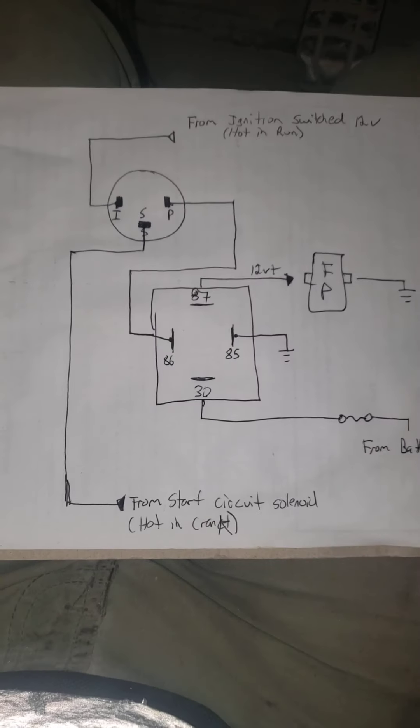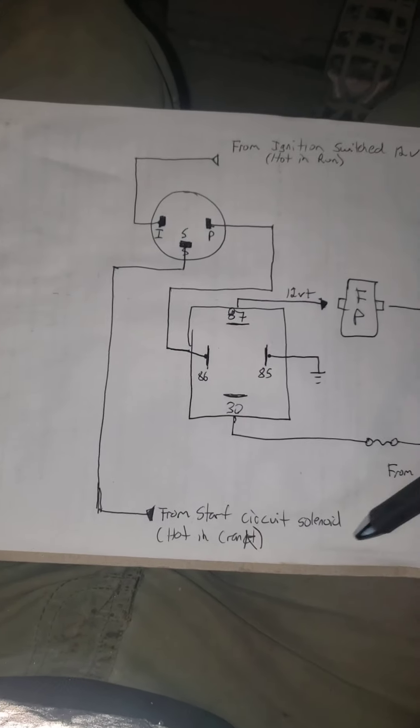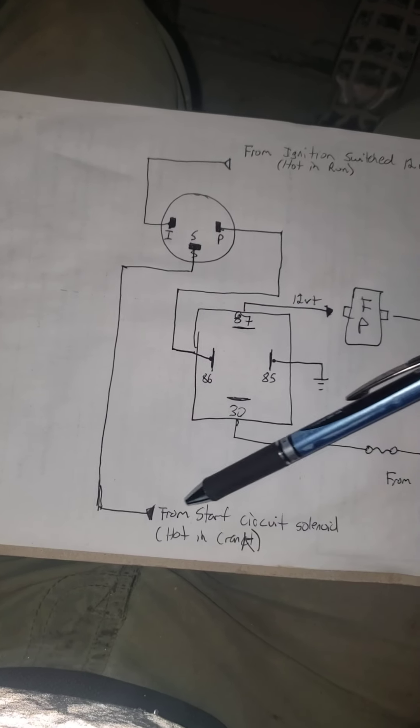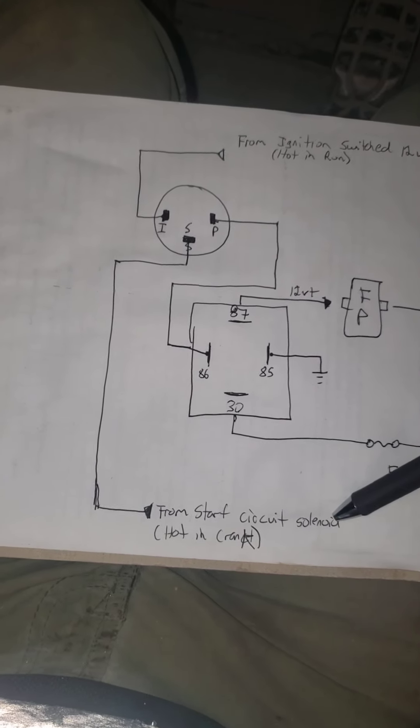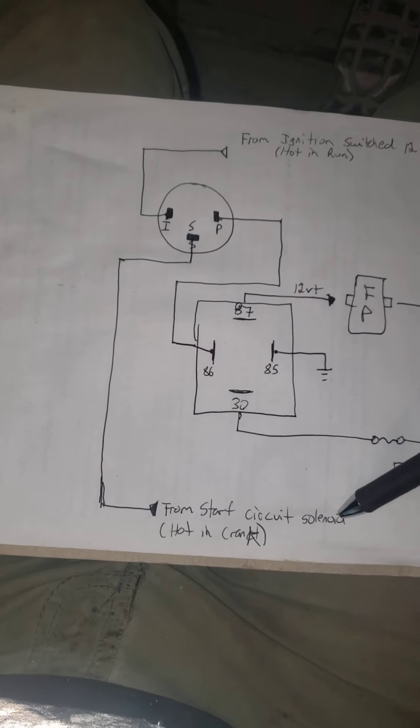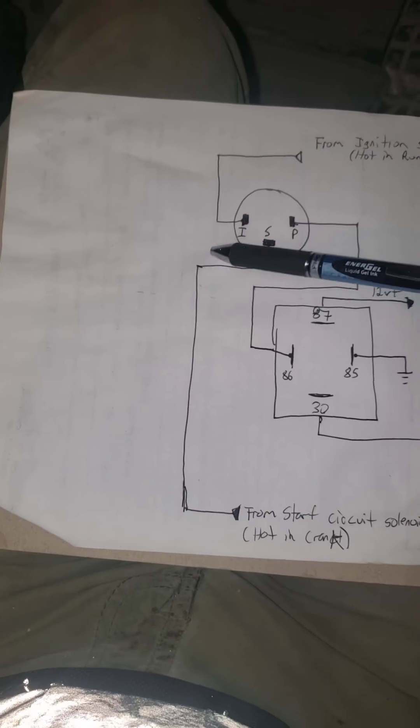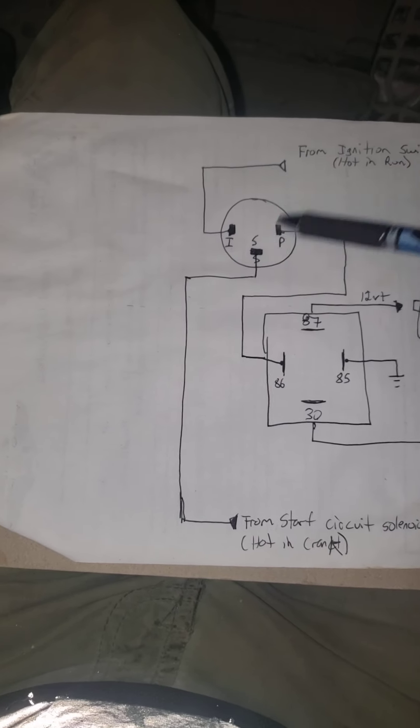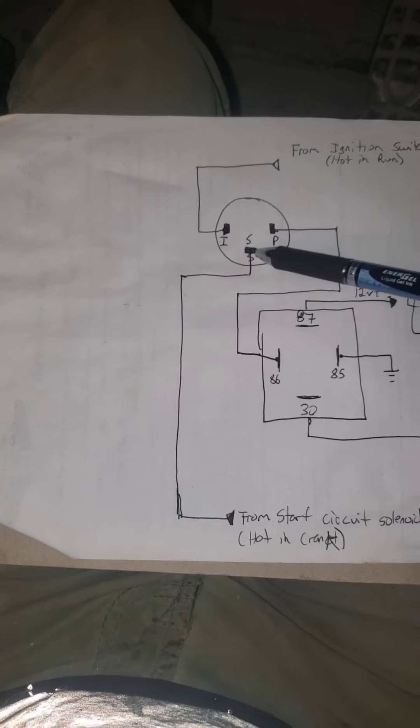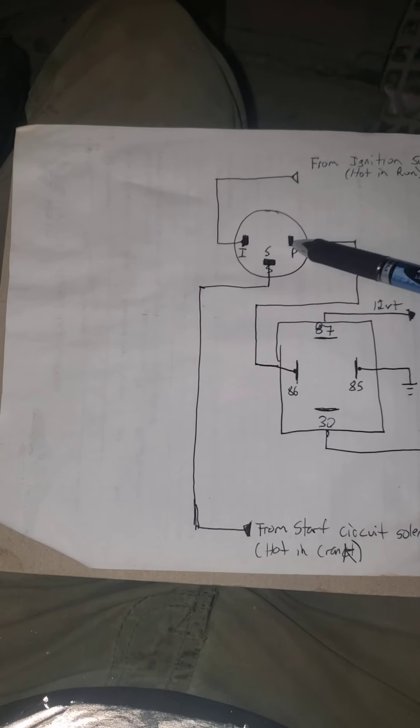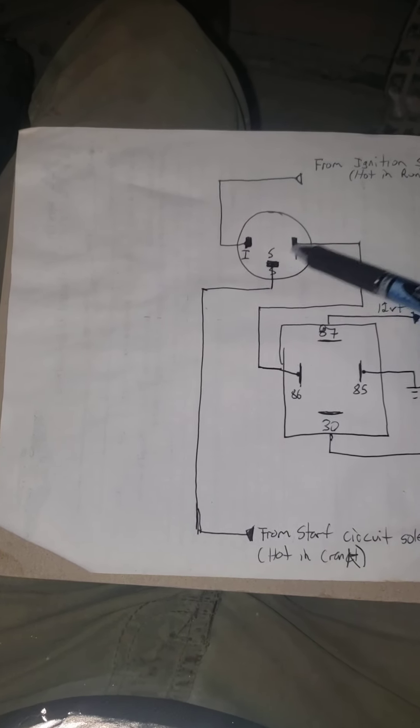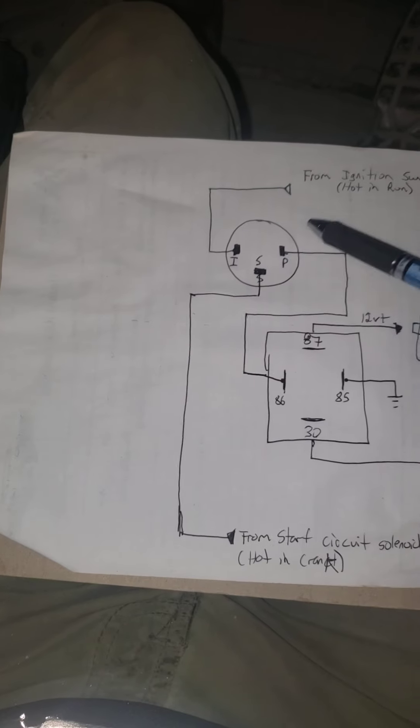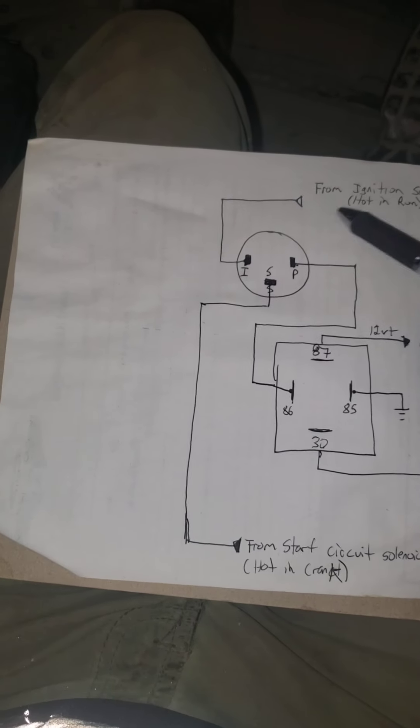Basically when you start your engine, you turn the key on and turn the key over to crank. You have current coming from the start circuit solenoid off your starter. It's hot whenever it's cranking, so that current is flowing up through this wire to the S terminal on your oil pressure safety switch. It's normally closed between S and P. These contacts are connected to each other at all times while the engine is not running.